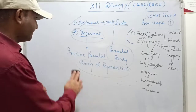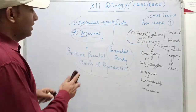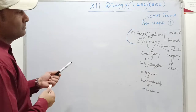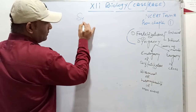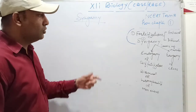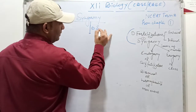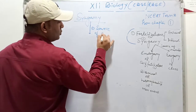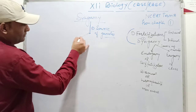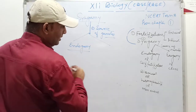That completes fertilization — its types and syngamy as two different terms. Next is syngamy. The definition I already explained: the fusion of pronuclei is called syngamy. Syngamy is of two types: first, based on source of gametes, which gives us two types — endogamy and exogamy.